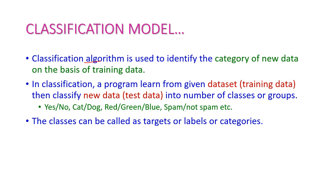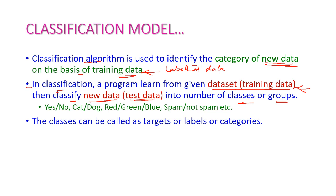The classification algorithm is used to identify the category of new data on the basis of labeled training data. In classification, the model learns from the training data set and classifies the new test data into a number of classes or groups, which are called targets. Examples include: yes or no, cat or dog, red/green/blue colors, and spam or not spam in mail classification. These classes are also called labels or categories.